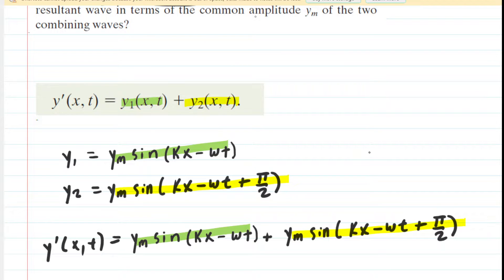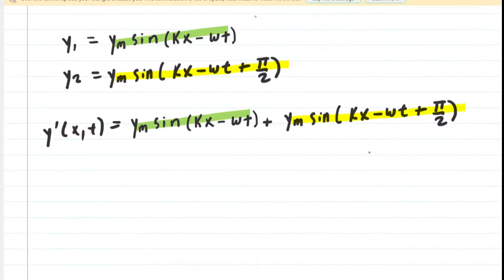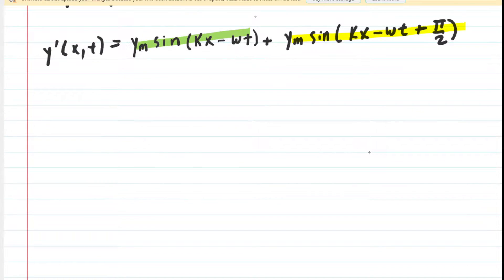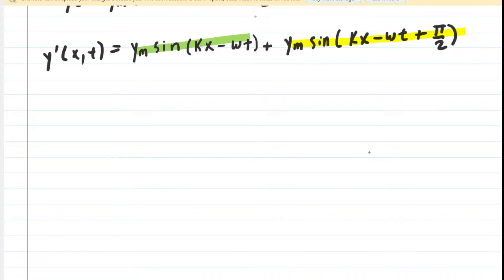There are the two wave equations added together. What we want to do is simplify this equation. That looks like a pretty daunting task, but we're going to simplify this by taking advantage of the following trigonometric identity.